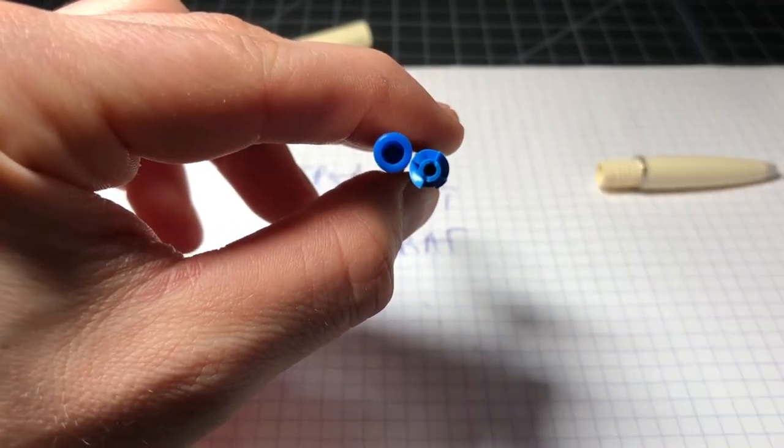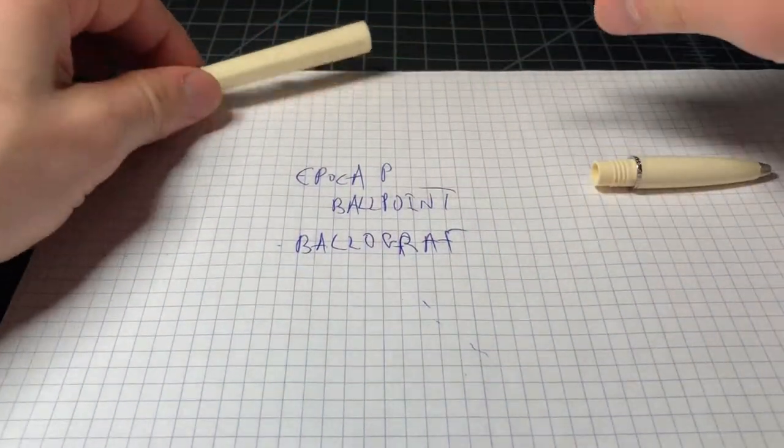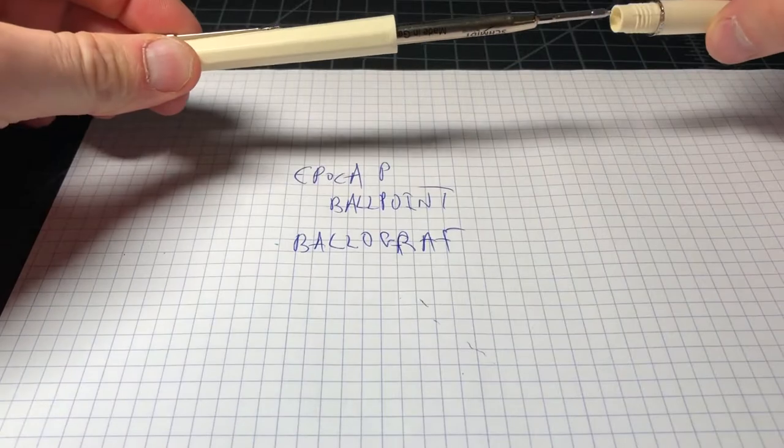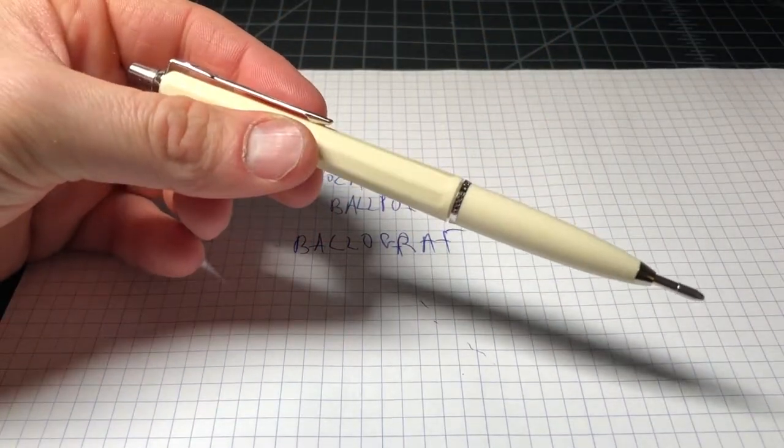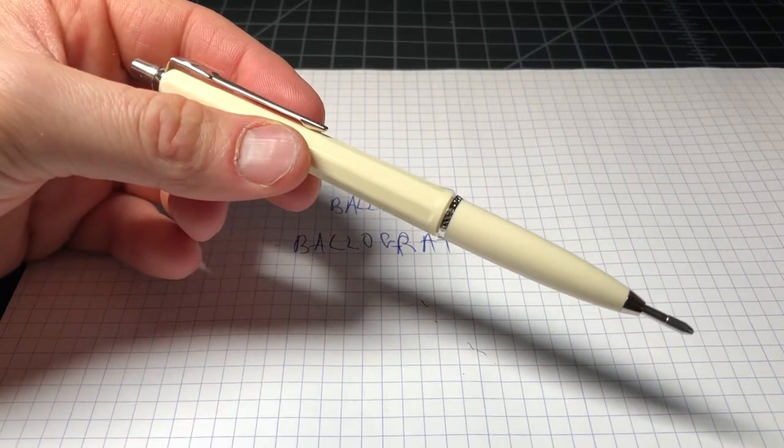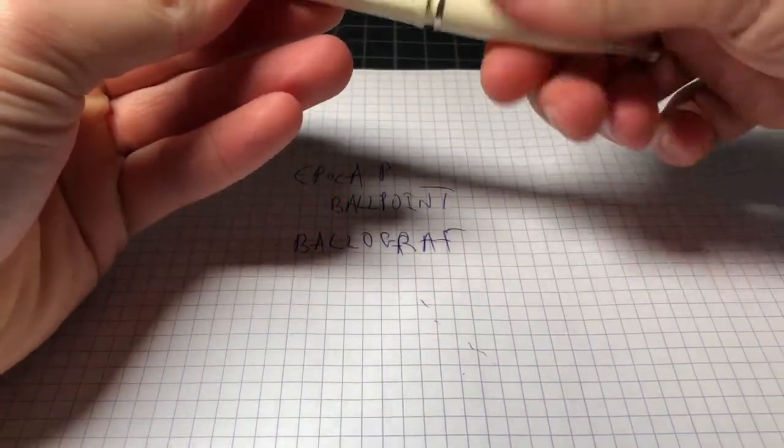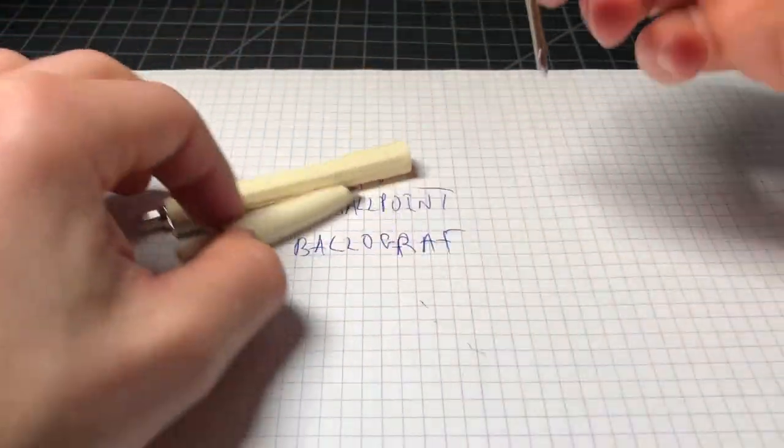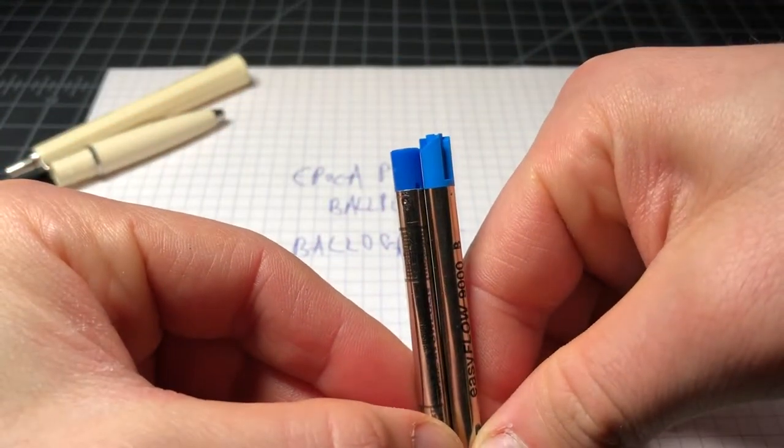And that ends up being really important, because if you try to use the Parker-style, it's way too long. I would expect it to be a little bit too long. Obviously, it's not clickable. I would expect it to be a little bit too long, because the Parker-style is a slight bit taller than the Bolograph.